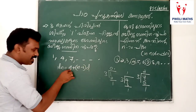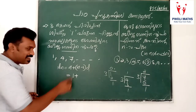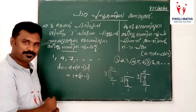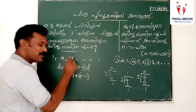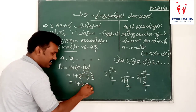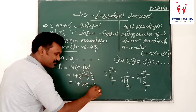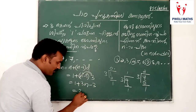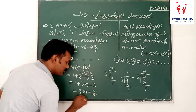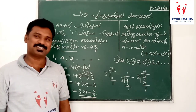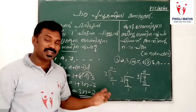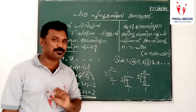a_n equals a plus n minus 1 into d. d equals 1 minus 1. Minus 1 equals 3, n equals 1 minus 3, 1 minus 3, minus 3. That answer is 3, and minus 2. Practice here: 1 and 3.